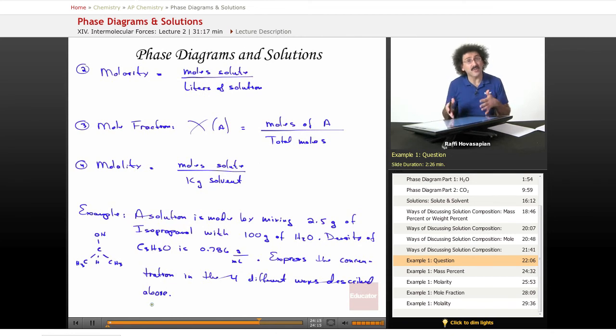Are we using molality? Molarity? Mole fraction? Mass percent? Something else called normality? Once again, we have 2.5 grams of isopropanol, which is a liquid, mixed with 100 grams of H2O, also a liquid.